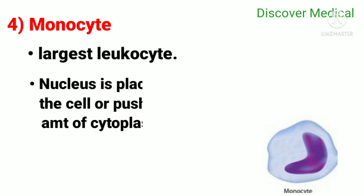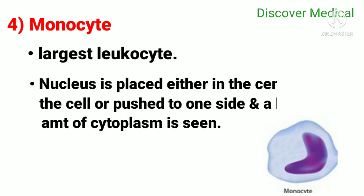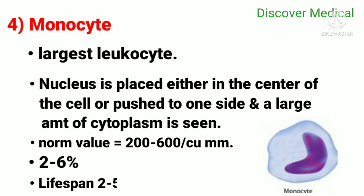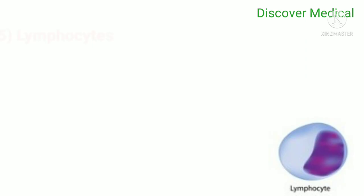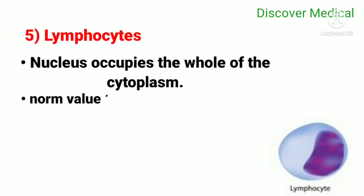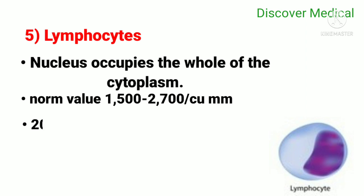The monocyte nucleus is placed either in the center of the cell or pushed to one side, and a large amount of cytoplasm is seen. Normal value is 200 to 600 per cubic millimeter, two to six percent, and lifespan is two to five days. Lymphocytes: the nucleus occupies all of the cytoplasm. Normal value is 1,500 to 2,700 per cubic millimeter, 20 to 30 percent.